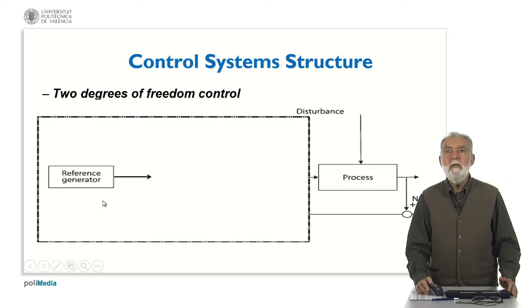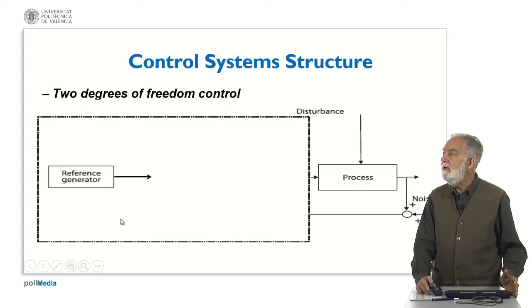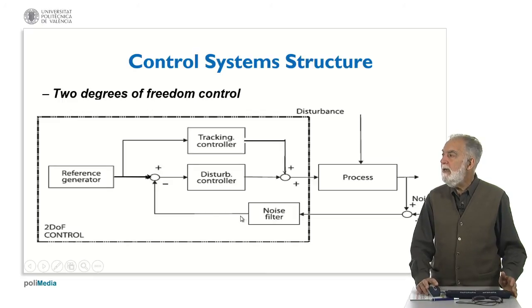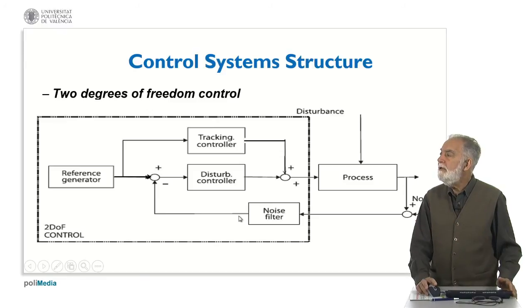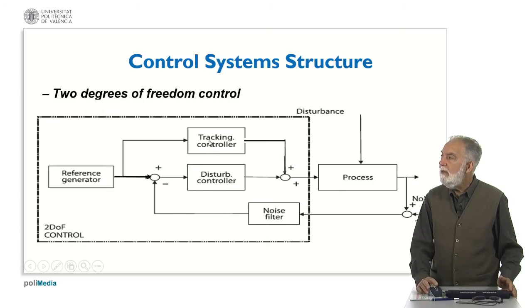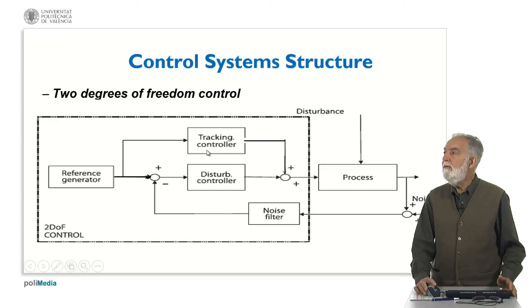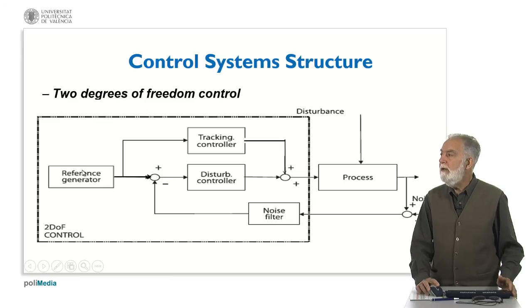We can also consider a more complicated structure. In general, we want to reject disturbances and we want to follow a reference — these are the problems of regulation and tracking. We can devise a structure where we have one controller focused on rejecting disturbances, and another controller mainly focused on following the reference — this is the tracking controller. In that case, we can adjust these two controllers with different purposes: to reject disturbance or to follow a reference signal. This is a two degree of freedom control.